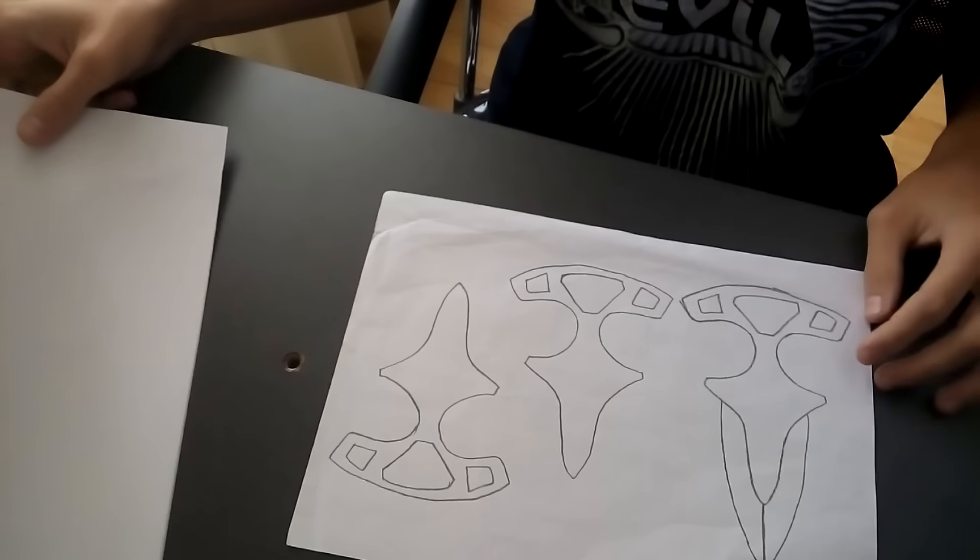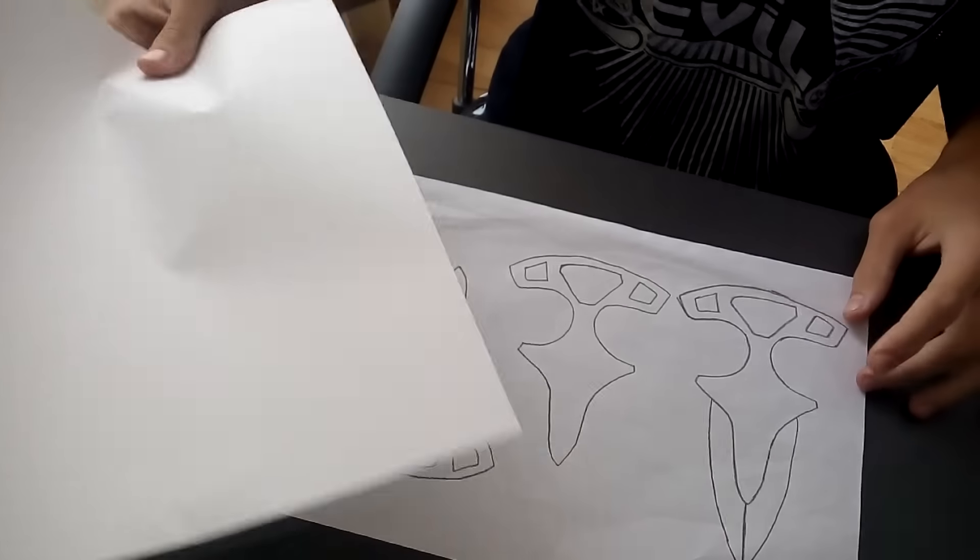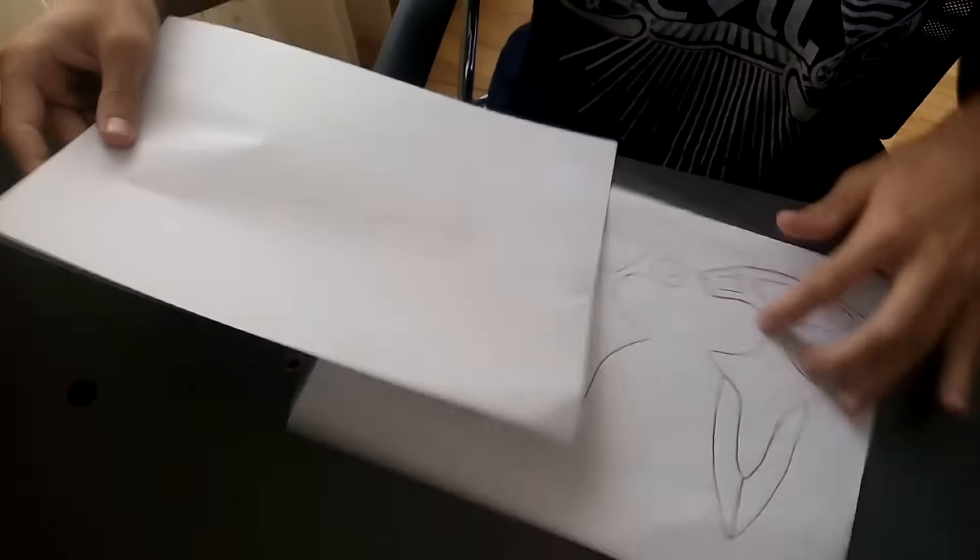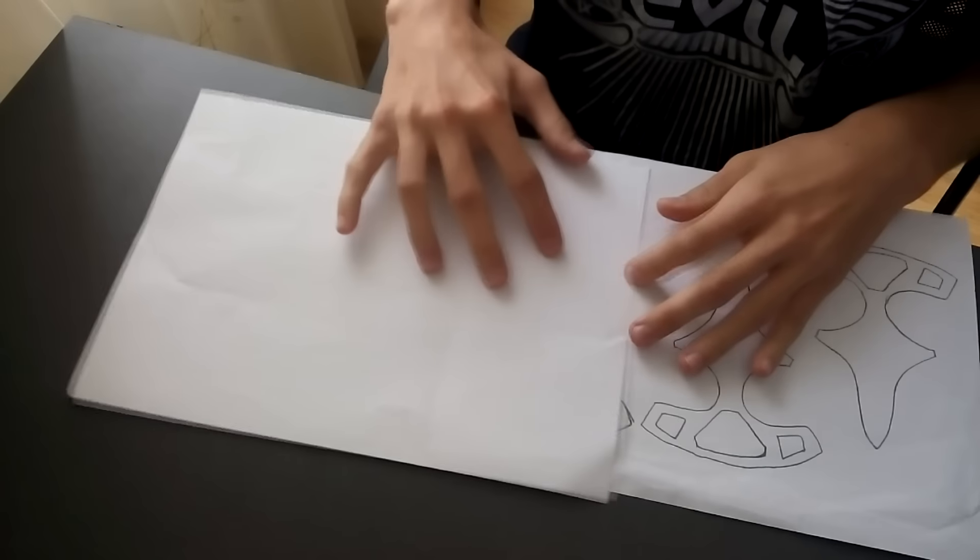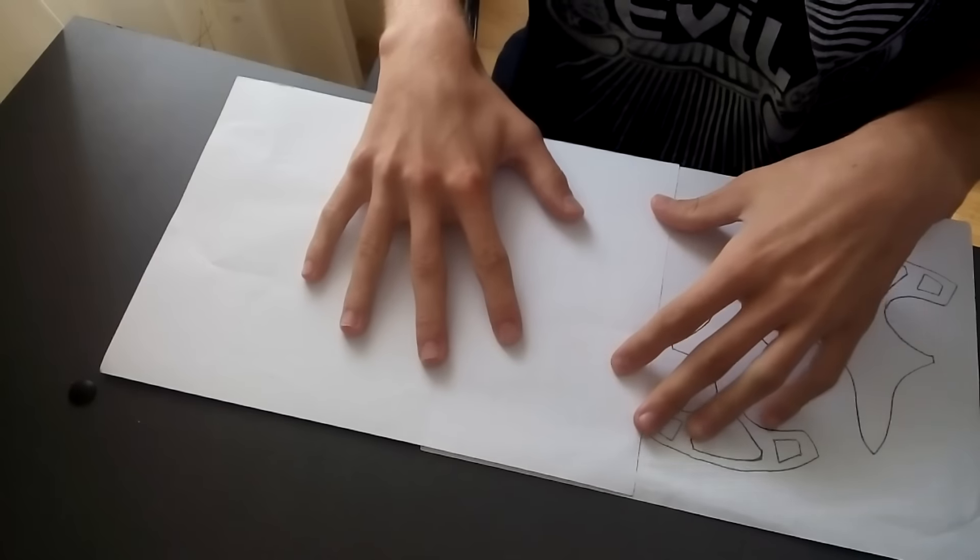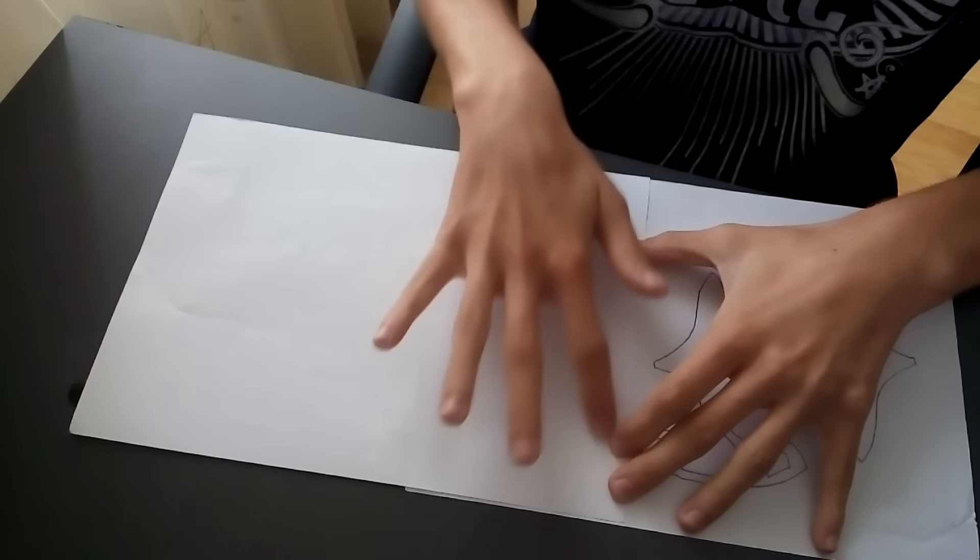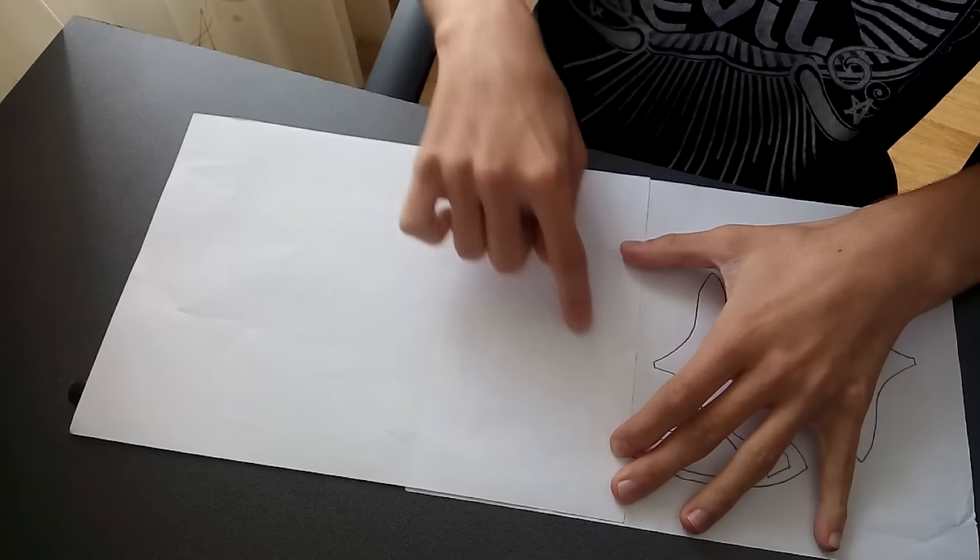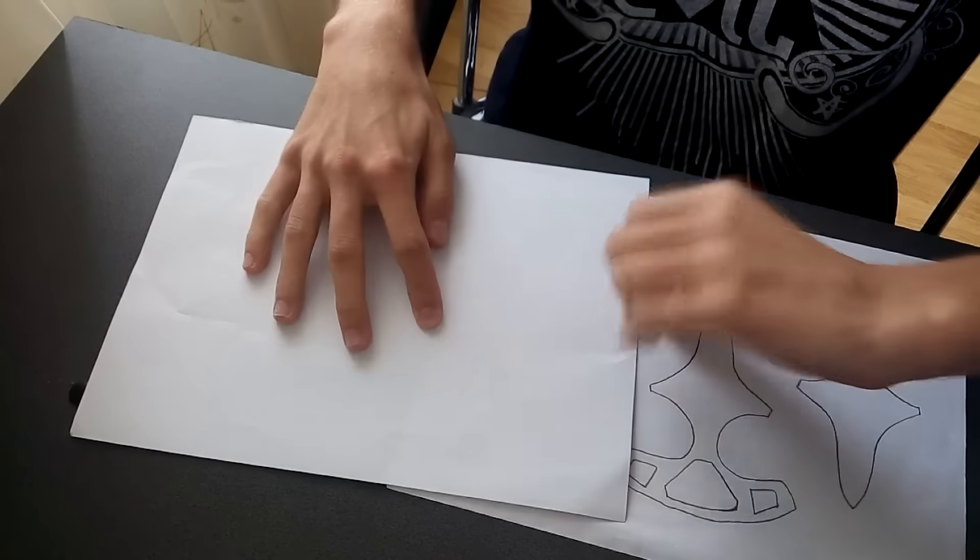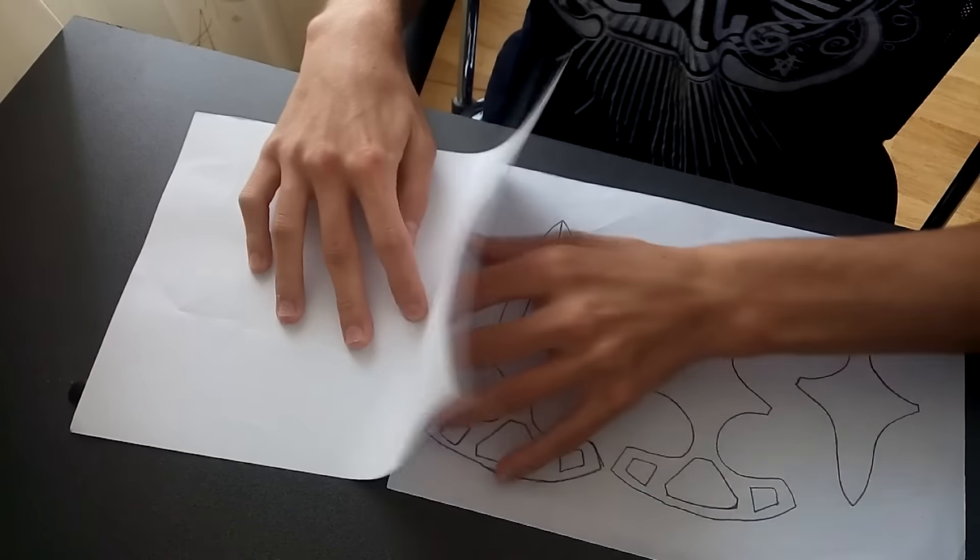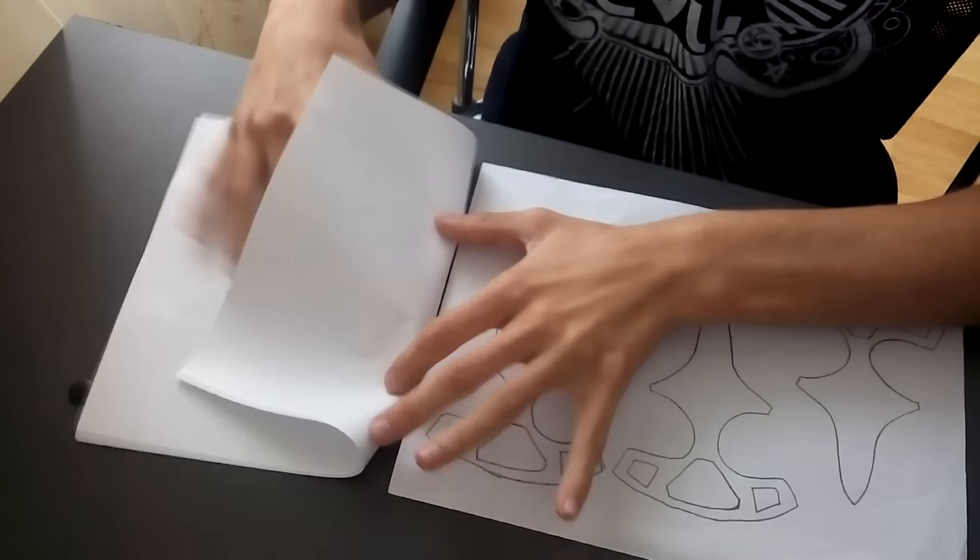So first of all you have to take the cut sheet and another paper and place them one on top of each other like this. I'm not sure if you can see this in the video but you can clearly see the drawing right there. And now you have to fold it something like this.